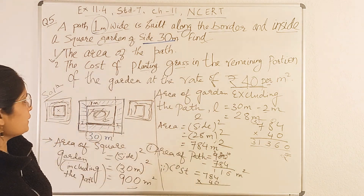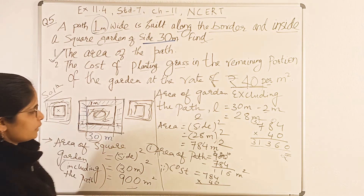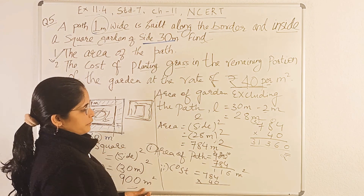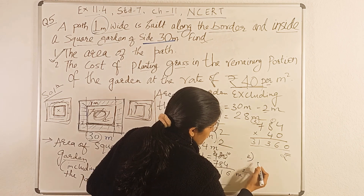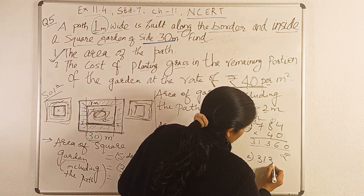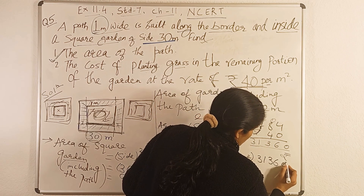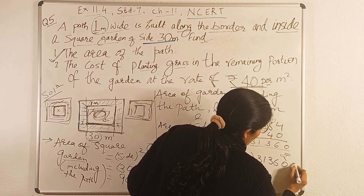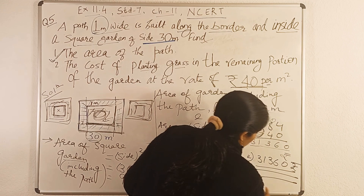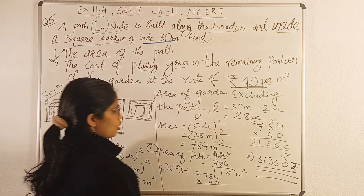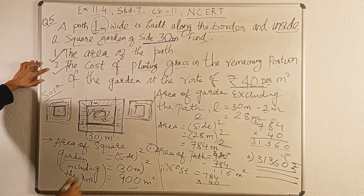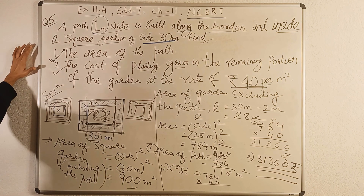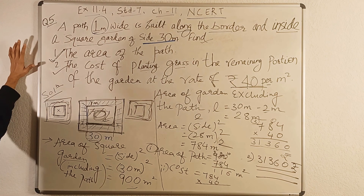So this is the answer for the second part: 31,360 rupees. This much will be the cost. So first part and second part — both have been solved. I hope you understood the solution part of question number 5.